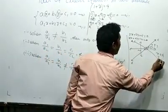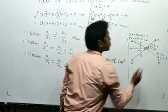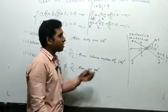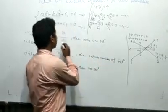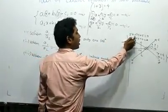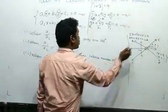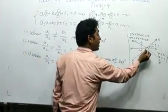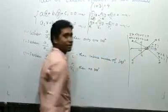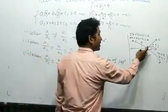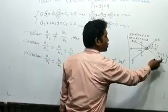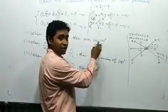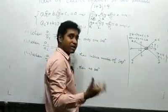That intersection point is the solution. So when a₁/a₂ ≠ b₁/b₂, there is only one solution, corresponding graphically to two lines intersecting at exactly one point.